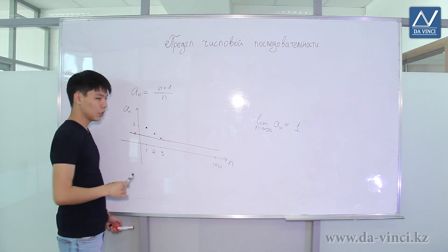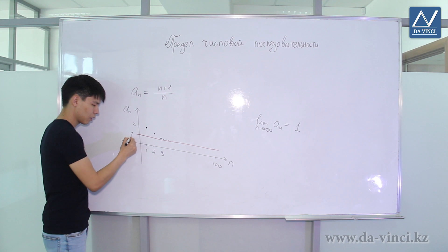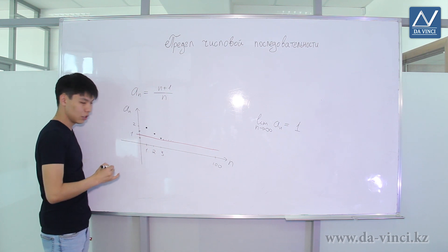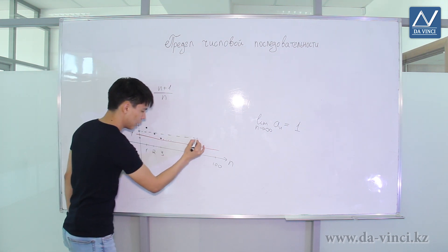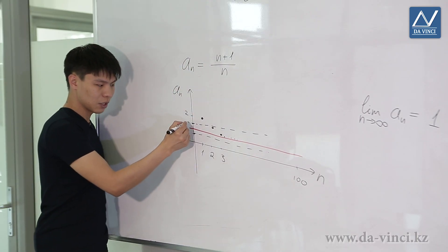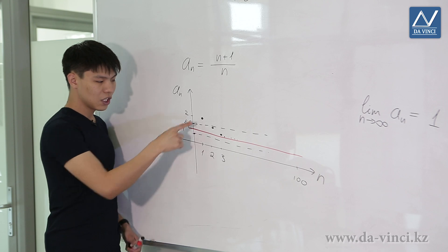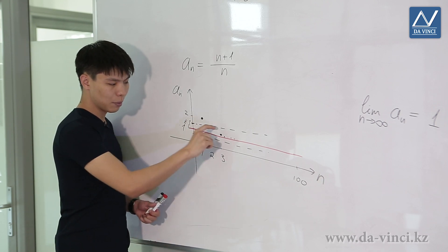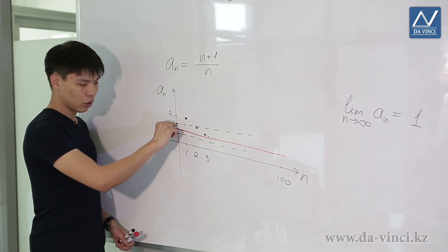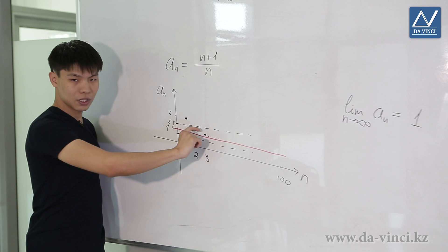Let's take a closer look at the limit. If we take a small corridor around 1 — that is, put a little space above and below 1 and draw lines — we get a little corridor, also called epsilon. Note that all elements of the sequence, starting from some number, fall into the epsilon corridor. And we can make this corridor even smaller: if we reduce epsilon, all elements of the sequence stay inside this corridor starting from some number.